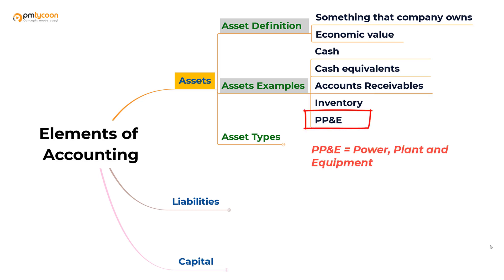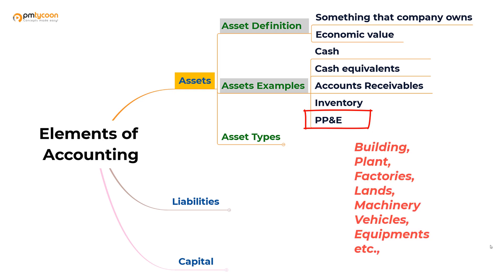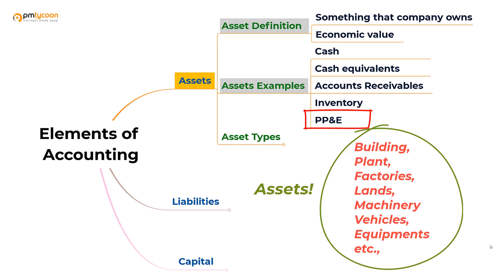Then we have property, plant, and equipment, denoted as PP&E. Most organizations will have properties like buildings, factories, land, and machinery and equipment. These all hold economic and monetary value because if we sell them we get cash, hence they are considered assets. These are tangible assets — we can see, feel, and touch them — and they are vital to business operations. Without machinery, plant, or equipment, a company cannot produce goods to sell. And since these are hefty investments, they hold significant monetary value.